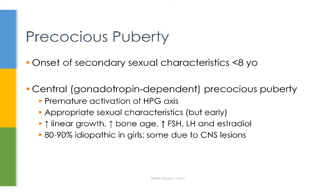Sometimes puberty may occur earlier than expected in a child. When this happens, we call that precocious puberty. The definition of precocious puberty is the onset of secondary sexual characteristics before 8 years old in girls. In boys it's 9, but that's not too important for OBGYN. The reason we chose 8 as the age cutoff is because this is about 3 standard deviations from the mean age of puberty.